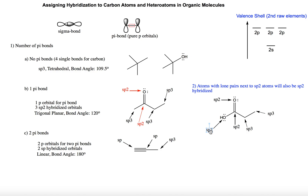So how do you identify this? Any heteroatom having lone pairs which is next to an SP2 hybridized atom will also be SP2 hybridized. Very important to keep in mind.